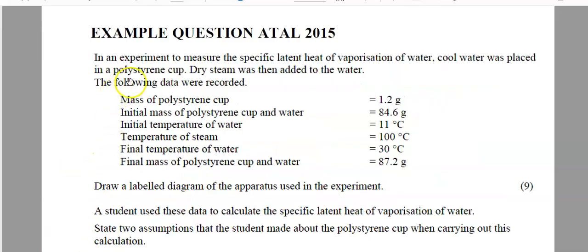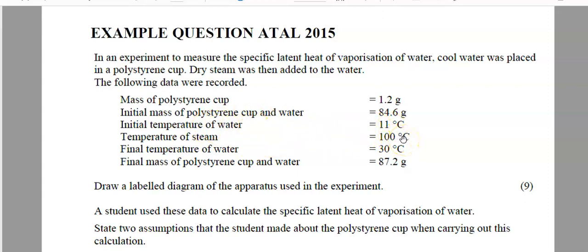Now let's run through this question. In an experiment to measure the specific latent heat of vaporization of water, cold water was placed in a polystyrene cup. Dry steam — meaning literally dry with no droplets of water in it — was then added to the water. The data recorded: mass of the polystyrene cup in grams; initial mass of polystyrene cup plus water, so by subtraction you can get the mass of the water. The initial temperature of the water was 11 degrees, the temperature of steam was 100 degrees, and the final temperature of everything came to 30 degrees. We can work out the rise in temperature of the water, and we're assuming the calorimeter does not absorb heat.